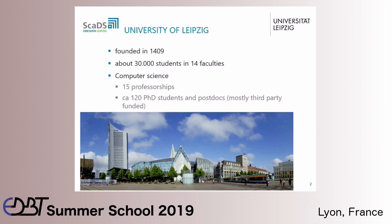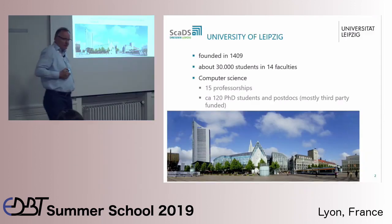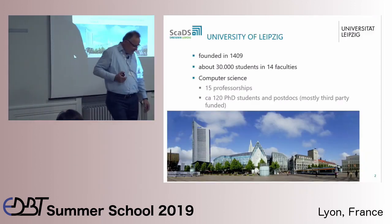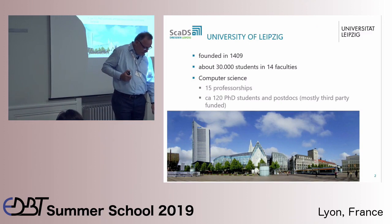We have master programs on bioinformatics, computer science, digital humanities, and will soon have a master program on data science. We have 15 professorships at the moment in computer science, about 120 PhD students and postdocs mostly funded by third-party money, and this number will grow in the future.